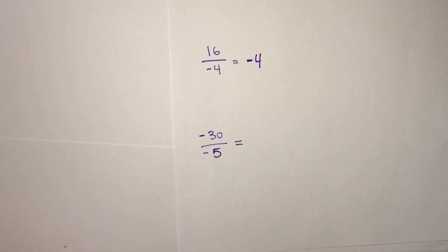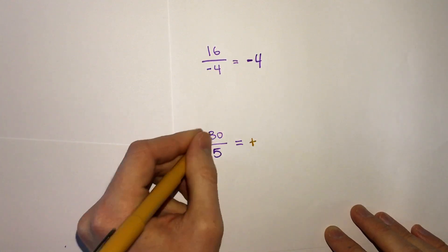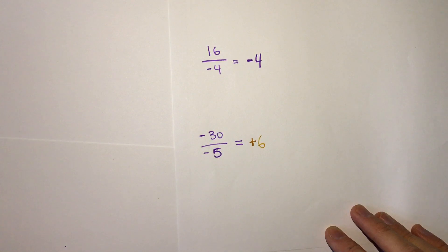And last, what if we have two negative numbers? Just like in multiplication, those will cancel and become a positive. And then 30 divided by 5 is 6. So negative 30 divided by negative 5 is positive 6.